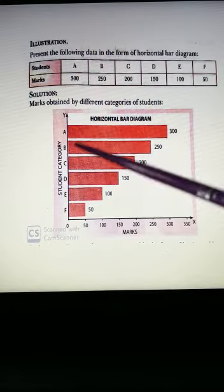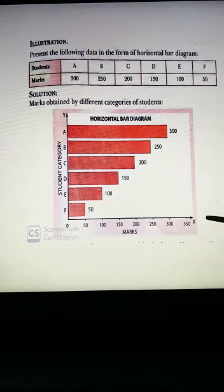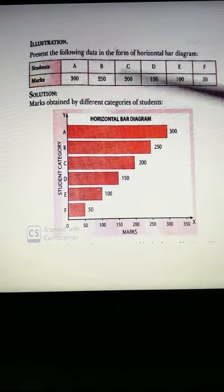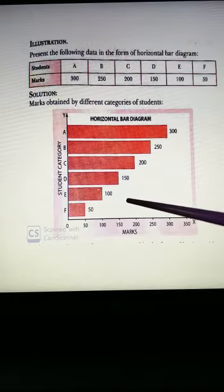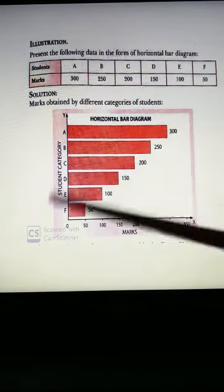And the second what we are seeing is horizontal bar diagram. See, student's name is given here and the marks we are taking, and we are taking the categories here, the student's category and marks we are taken here, and the horizontal bar diagrams are drawn here. And this is rarely, unless and otherwise it is mentioned in the question, you need not go for horizontal bar diagram. Always we are going for the vertical bar diagrams.